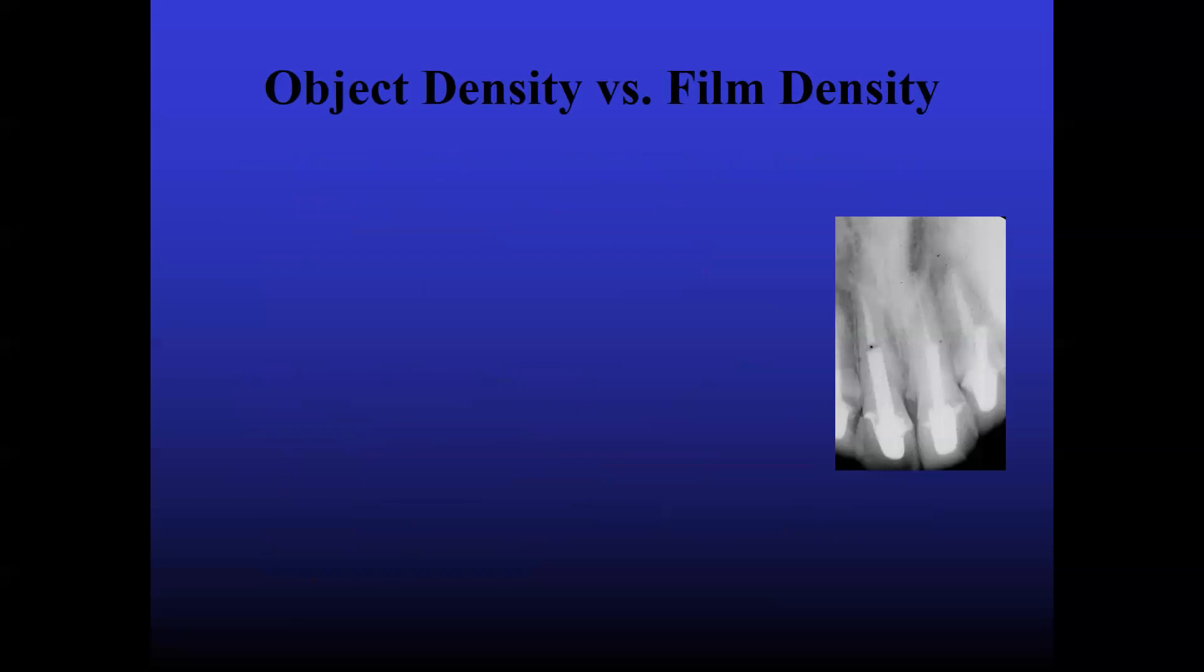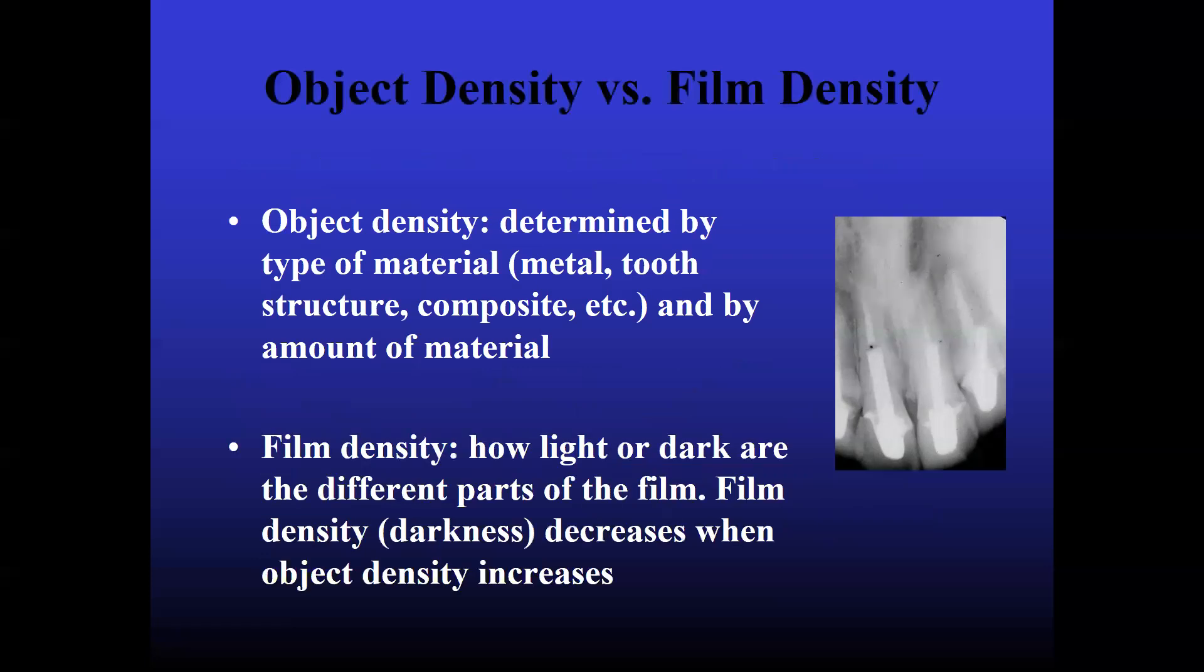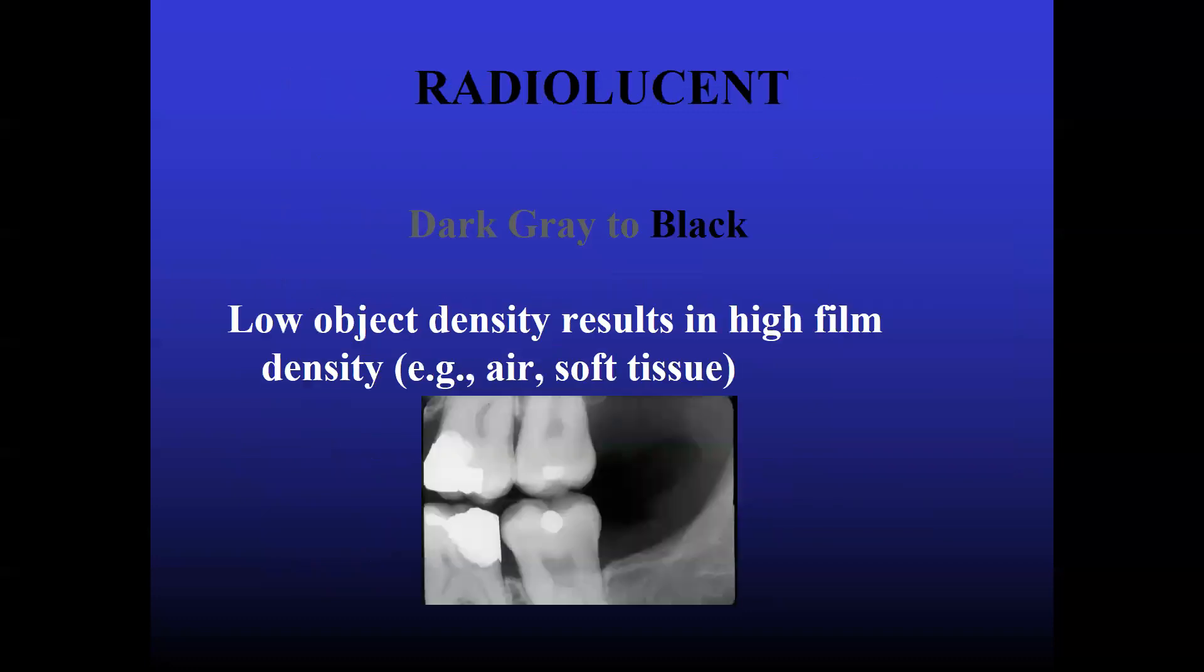So what is object density and film density? Object density is defined by the type of material. That is, metal, tooth structure, composite. It also includes the thickness of the bone etc. What is film density? How light or dark are the different parts of the film. Film density, that is the darkness, decreases when the object density is increased.